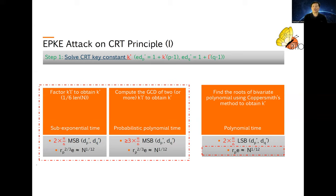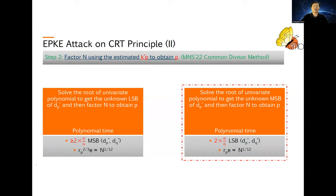The second step, we will use the calculated K' to estimate the K' times P, and then we will factor N using this estimated value to get P. In both MSB and the LSB cases, we just solve the root of a univariate polynomial to get the unknown part of the P and then factor N.